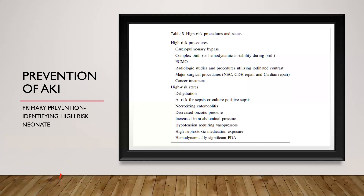Identification of high-risk newborns is very important because early initiation of treatment in AKI has the best outcomes. If you identify AKI and treat it timely, that will have the best mortality and morbidity benefits. Delaying treatment is the worst thing we can do, so identification of high-risk neonates is a very important part of managing neonatal AKI.